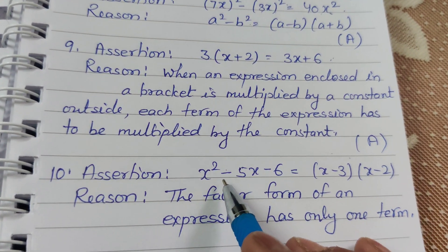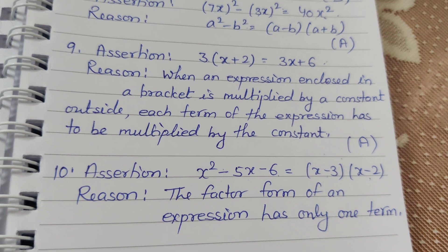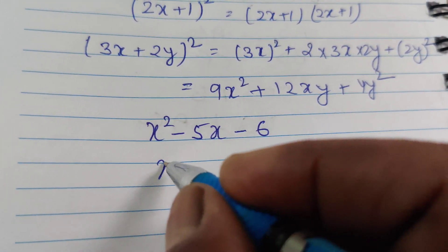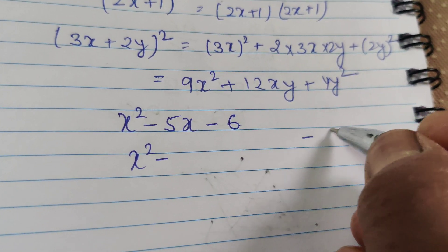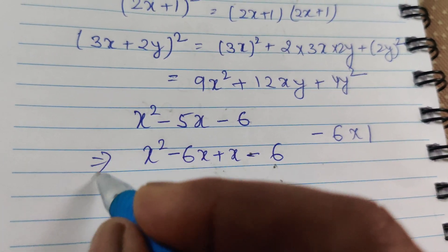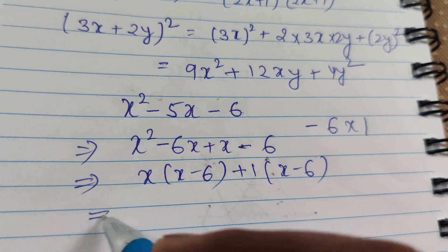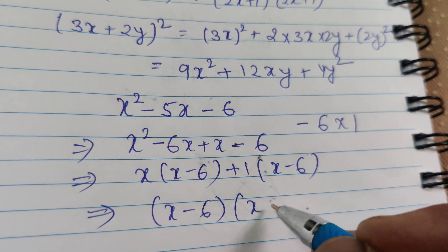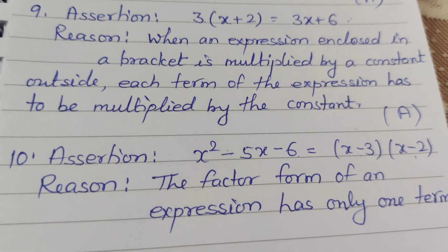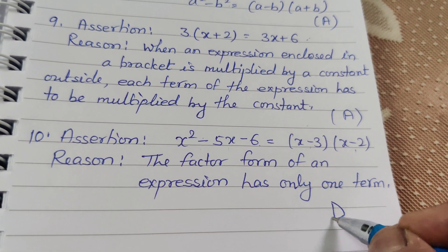Question 10 — Assertion: x² − 5x − 6 = (x−3)(x−2). Check factorization: splitting −5x as −6x + x gives x(x−6) + 1(x−6) = (x−6)(x+1), not (x−3)(x−2). Assertion is false. Reason states the factor form has only one term — also false. Since assertion is false, the answer is D.